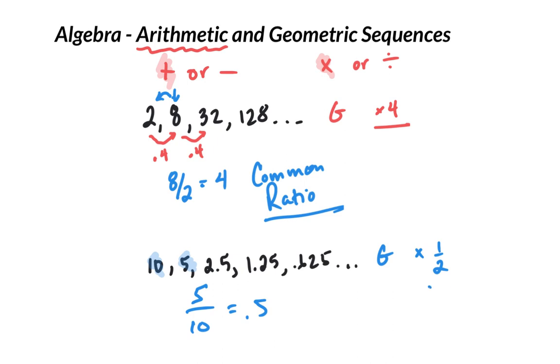So again, arithmetic we are looking for a common addition or subtraction. I always start by checking that. Geometric, we're looking for a common multiplication or division. The easiest way to calculate it is just take the second term, divide it by the first. It's never a bad idea to just make sure that that's consistent. Then try maybe doing the same type of thing with these two. Say, well, what if I divided this one by this one? Would I also get point five? That would verify it.